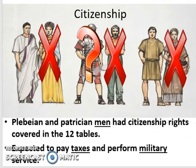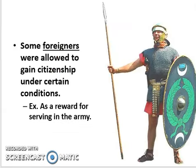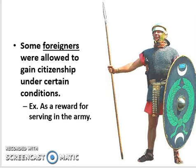Citizenship: plebeian and patrician men had citizenship rights covered in the 12 Tables. They were expected to pay taxes and perform military service. Women from both the patrician and plebeian classes were not considered citizens. Slaves were also not citizens. There is a question mark regarding foreigners — some foreigners were allowed to gain citizenship under certain conditions, such as serving in the army. So those who had political rights were free adult males and sometimes foreigners.